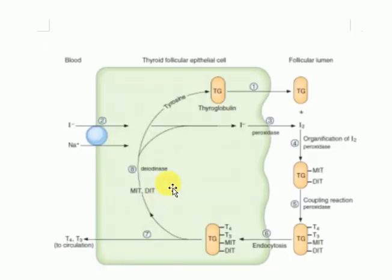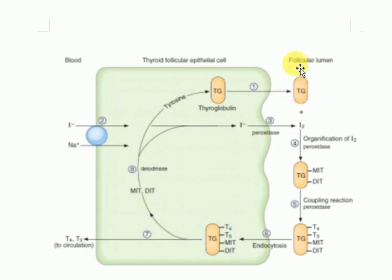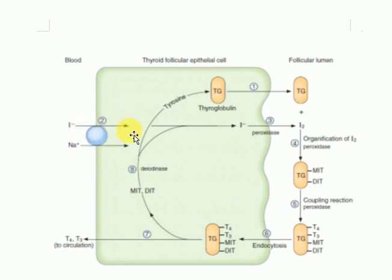Now let us look at the diagram to make this clearer. Step 1 shows thyroglobulin formation inside the thyroid follicular cells from tyrosine. The thyroglobulin is then extruded out into the follicular lumen. Step 2 is iodide trapping through the sodium-iodide co-transporter present on the follicular cells, through which iodide is transported inside the follicular epithelial cells for further incorporation into thyroid hormones.